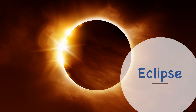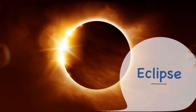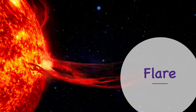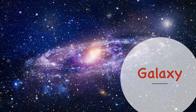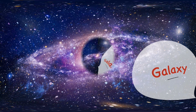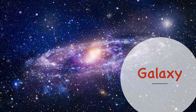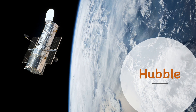E is for eclipse. F is for flare. G is for galaxy. H is for Hubble.